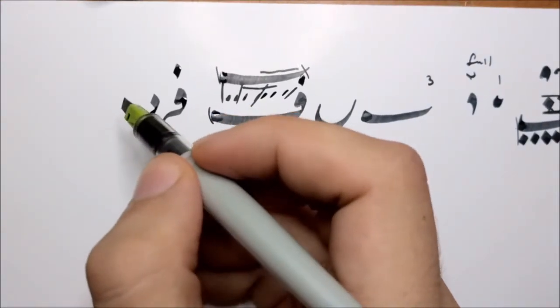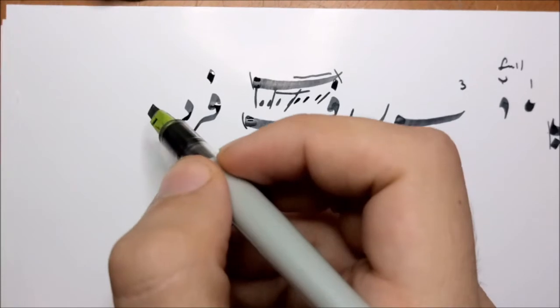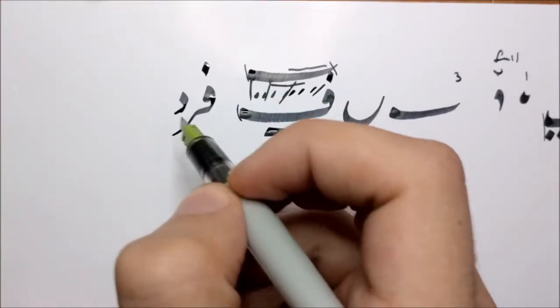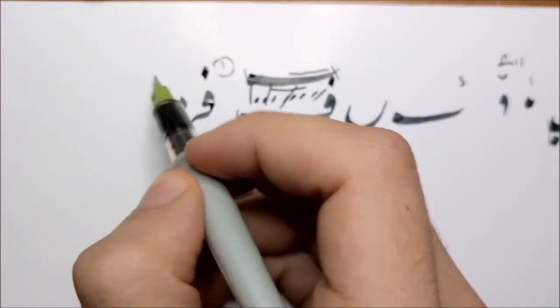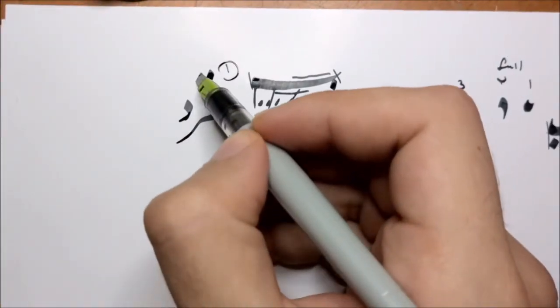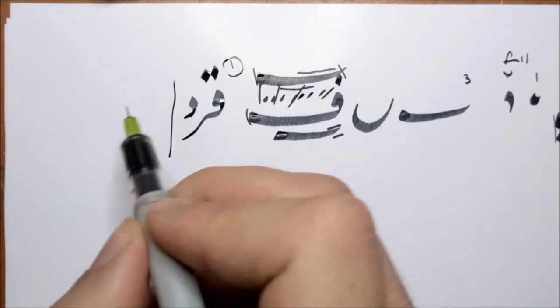Now the other case for the Fa which is also similar to a Qaf is the middle shape of it. So this is the Fa. Also a Qaf would work like this. For example Qard. Just add two dots. Now we will talk about the Qaf by itself.